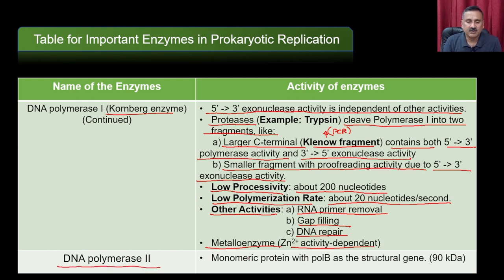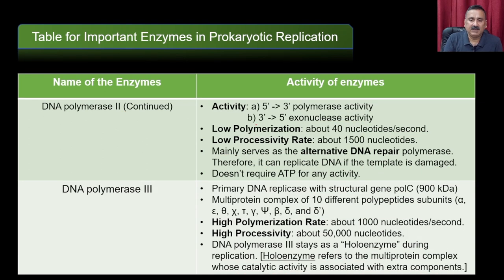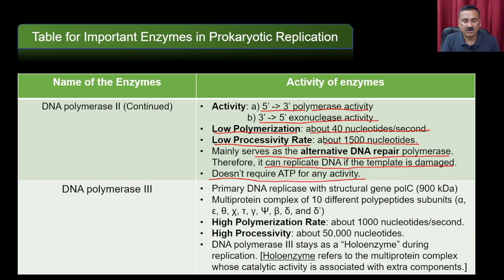DNA Polymerase II (Pol2) is a monomeric protein with polB as its structural gene, with a size of 90 kDa. It has two activities: 5' to 3' polymerase activity and 3' to 5' exonuclease activity. It has a low polymerization rate (~40 nucleotides per second) and low processivity (~1500 nucleotides). It mainly serves as an alternate DNA repair polymerase, able to replicate damaged DNA templates. It does not require ATP for any of its activities.